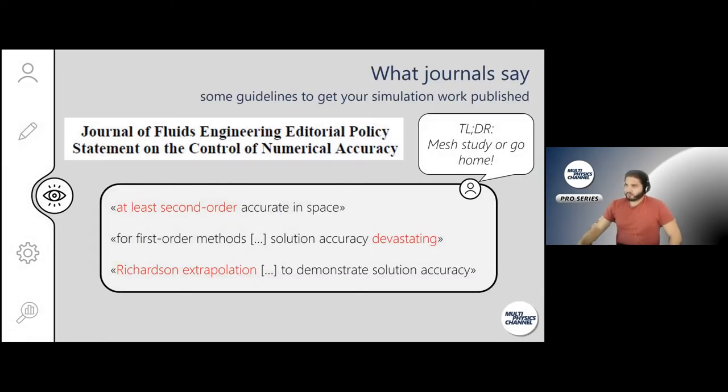But first, I think you need to know what the journals say. So when you do mesh studies and when you do modeling as such, sometimes some software tools have by default the first order discretization because it saves you CPU time. But when you want to submit a publication or a manuscript that has simulation work in it, you should make sure that it has second order accuracy. Why? Because for first order methods, they say that solution accuracy is devastating. And another tool to use is the Richardson extrapolation, so you can basically prove that what you're calculating has hands and feet.